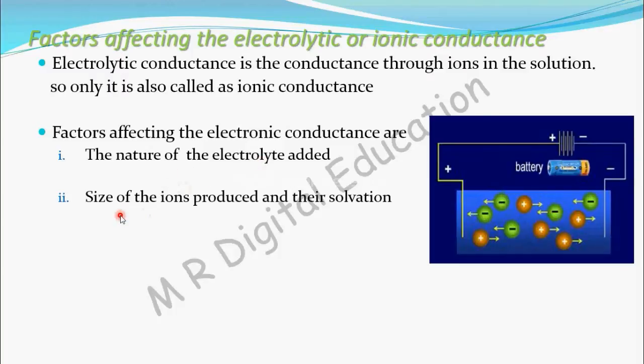The second factor is the size of the ions produced and their solvation. Some ions are bigger and some are smaller. For example, the CS₃COO⁻ ion is bigger while the H⁺ ion is smaller. Bigger ions face more obstruction, so conductivity decreases. Smaller ions can move easily, so conductivity is higher.